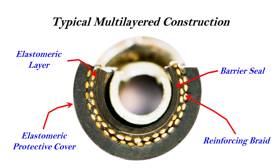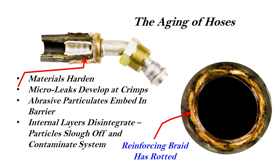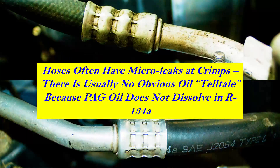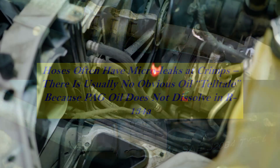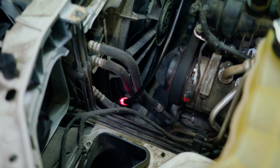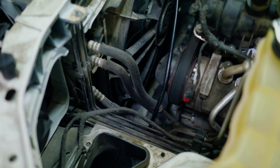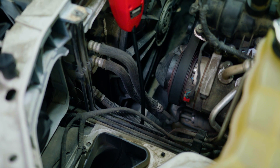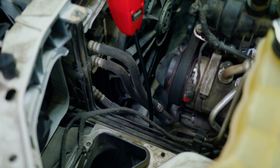Hoses are composed of a series of custom layers of organic rubber compounds and reinforcement braid. As it ages, it hardens, shrinks, and crystallizes. This deterioration can result in micro leaks at hose crimps. Since PAG oil does not dissolve in R134A, there is usually no tell-tale oil stain at the point of the leak. Micro leaks that result in a low charge over time can be difficult to find with either dye or electronic leak detection methods.